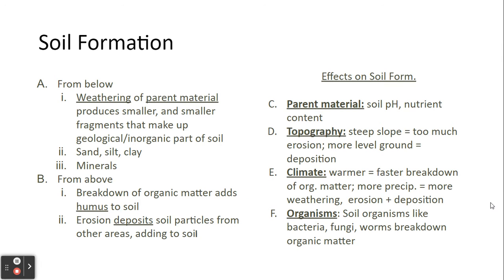Let's look at soil formation from above and from below. Looking at the bare rock — we know that's going to get weathered, and we tend to call that bare rock the parent material because that's what we're starting with. Over time, it's going to produce smaller and smaller fragments that help make up the inorganic part of our soil — the composition of sand, silt, clay, and maybe some minerals. When we look at it from above, we tend to see a breakdown of organic matter. It's going to add humus to the soil, and erosion may deposit soil particles from other areas.